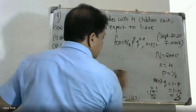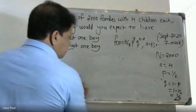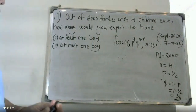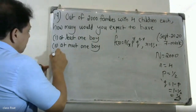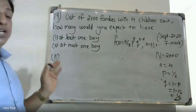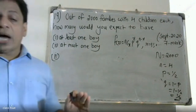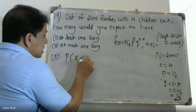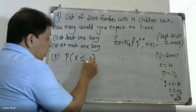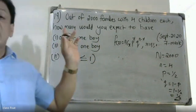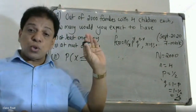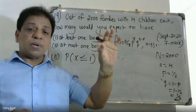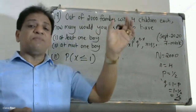Second question: at most one boy. We need the probability of X less than or equal to 1. At most one means the maximum value of x is 1.